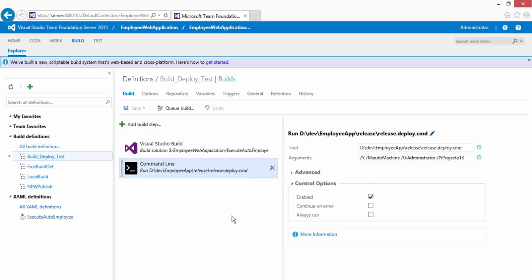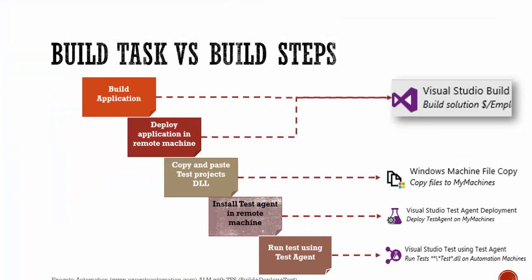In the last video we were discussing how to achieve the build steps and we discussed what each and every build task is and how to associate the build task with the build definition steps. We're going to do that, but before jumping in there we'll first talk about machine groups.